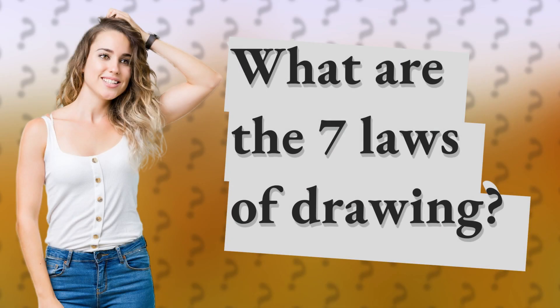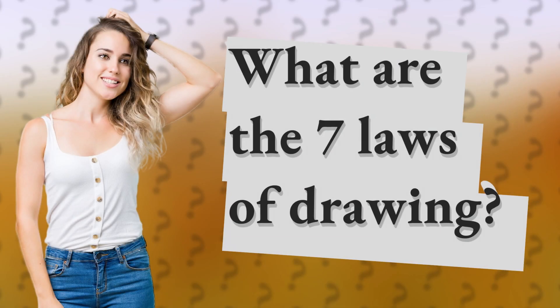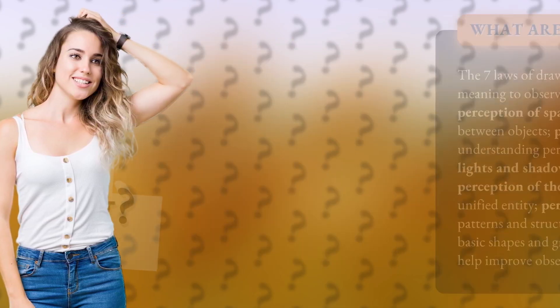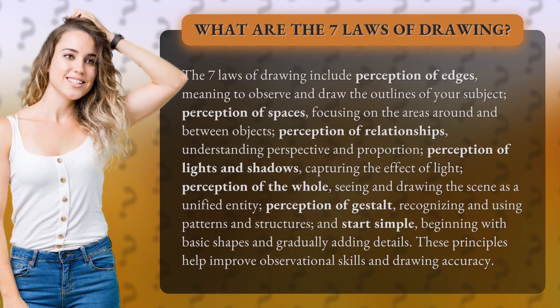What are the seven laws of drawing? The seven laws of drawing include perception of edges, meaning to observe and draw the outlines of your subject. Perception of spaces, focusing on the areas around and between objects. Perception of relationships, understanding perspective and proportion.